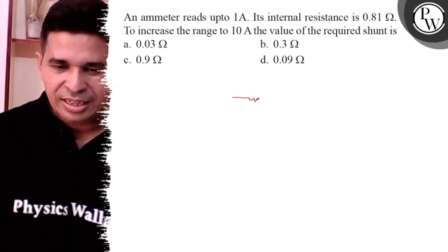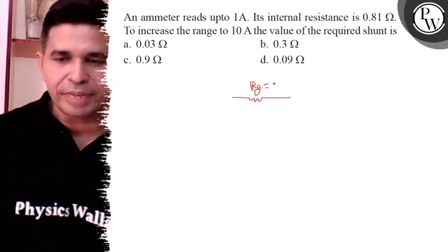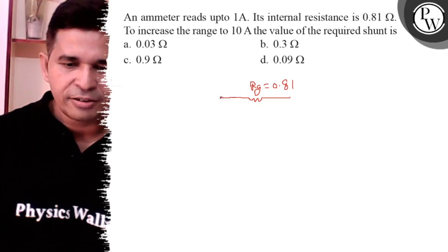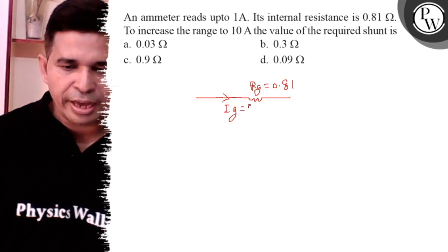Make its diagram. It is the resistance of ammeter or galvanometer. Initial ammeter is always the galvanometer and IG given is 1 ampere.